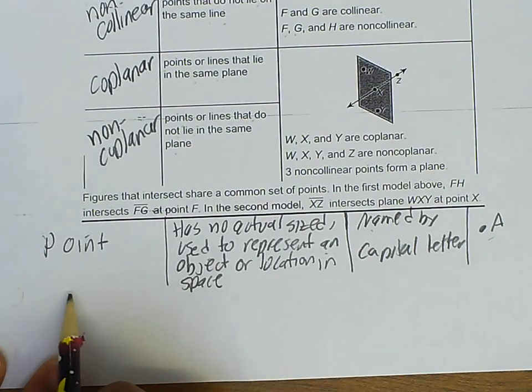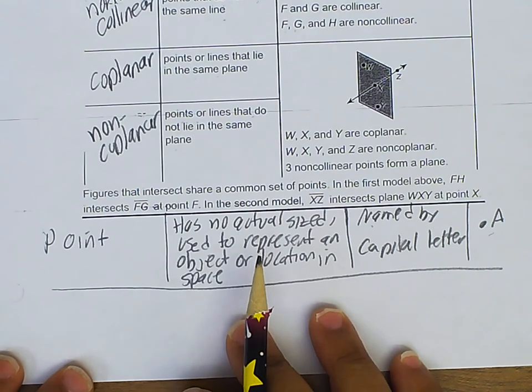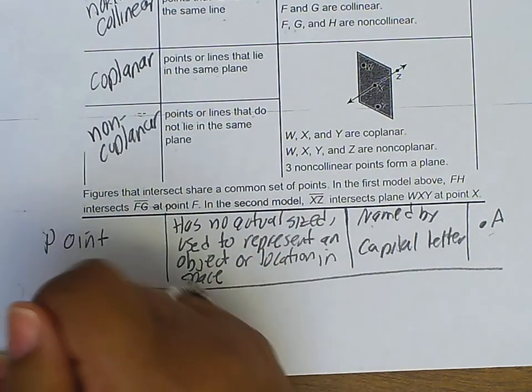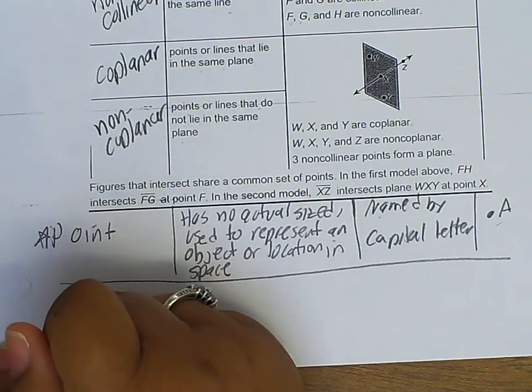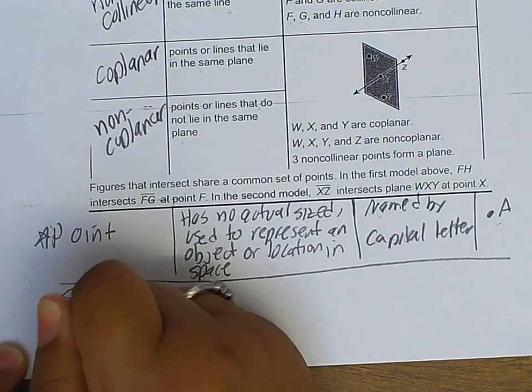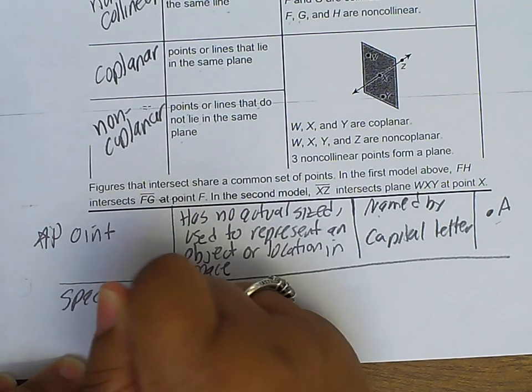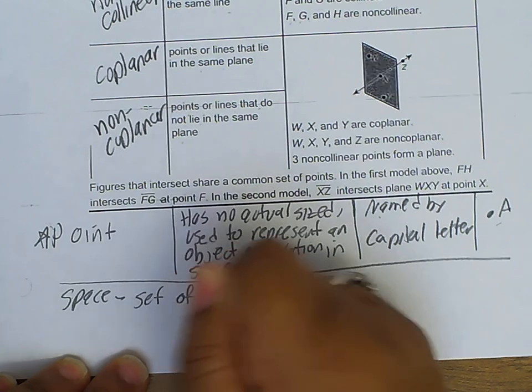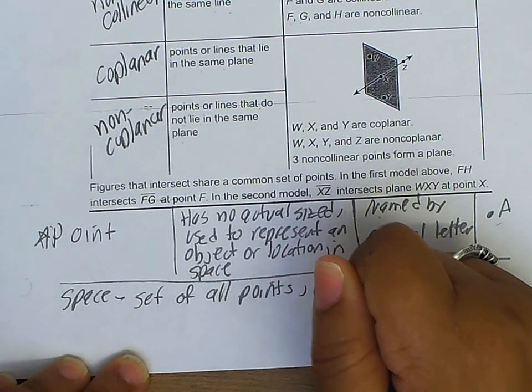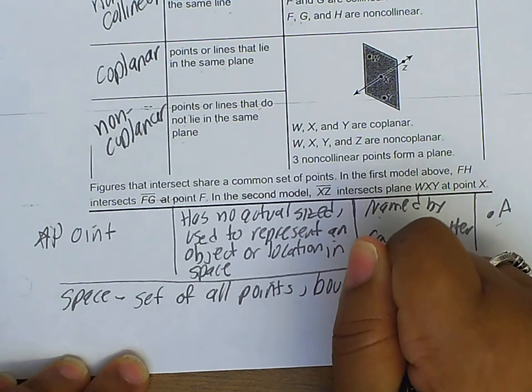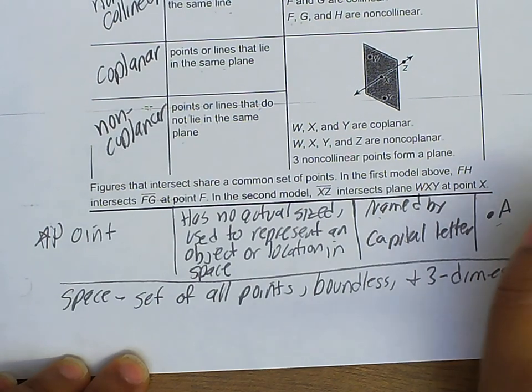Let's do space. And we can put a little star by that one too, because that's one of the ones that were in undefined terms. So let's write space. And this one I'm just going to define. It is a set of all points, is boundless and three-dimensional.